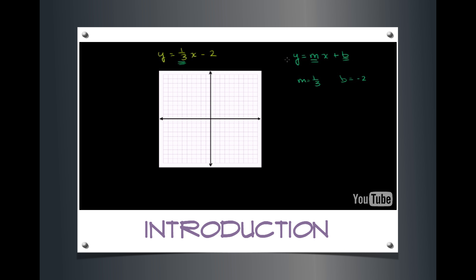Whenever you look at an equation in this form, it's actually fairly straightforward to graph this line. b is the y-intercept — in this case it is negative 2 — so that means this line must intersect the y-axis at y equals negative 2. That's this point right here, the point (0, negative 2).